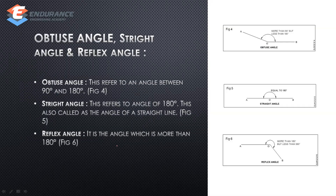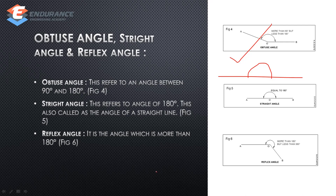The next ones are obtuse angle, straight angle, and reflex angle. Obtuse angle is above 90 degrees — that is, between 90 degrees and 180 degrees. Straight angle is 180 degrees — it is the angle of a straight line. Reflex angle is more than 180 degrees. So to summarize: below 90° is acute angle, exactly 90° is right angle, 90° to 180° is obtuse angle, 180° is straight angle, and above 180° is reflex angle.